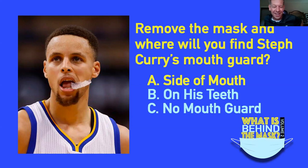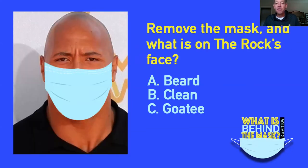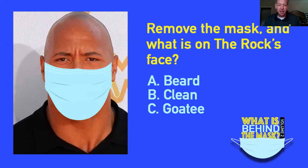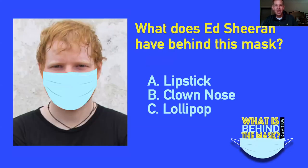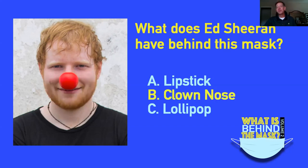Last question of the mask game: if you remove the mask, what will you find on The Rock's face — a beard, clean shaven, or a goatee? We've seen The Rock with all three looks. The answer on this particular day is: he's got a goatee. And the final one: Ed Sheeran — there's something unusual behind his mask. Is it lipstick, a clown nose, or a lollipop? Answer: he's got a clown nose. That's all for the game — we're now opening the floor for general Q&A.